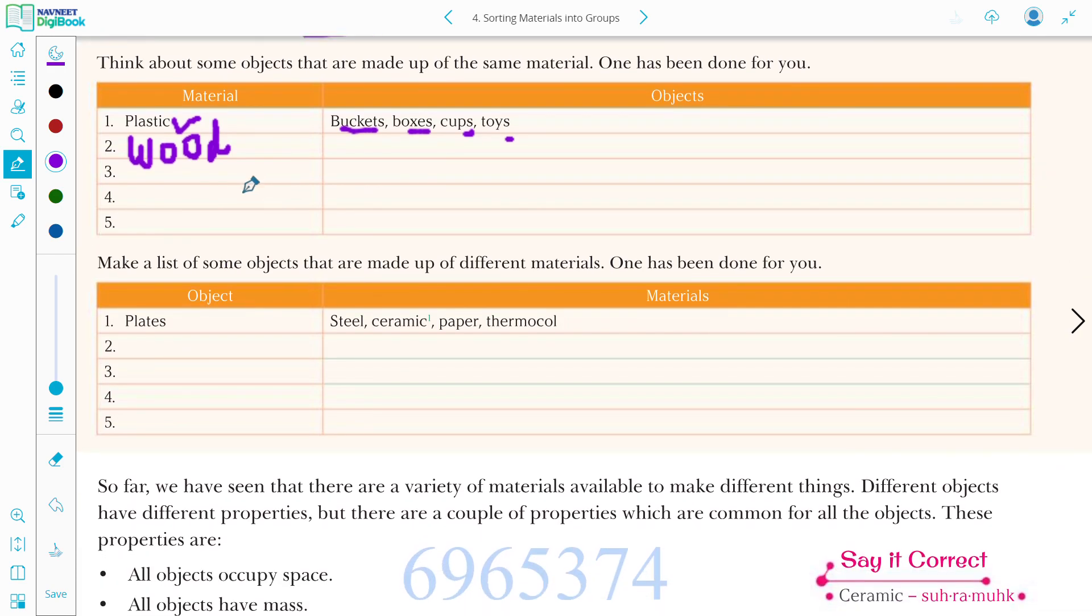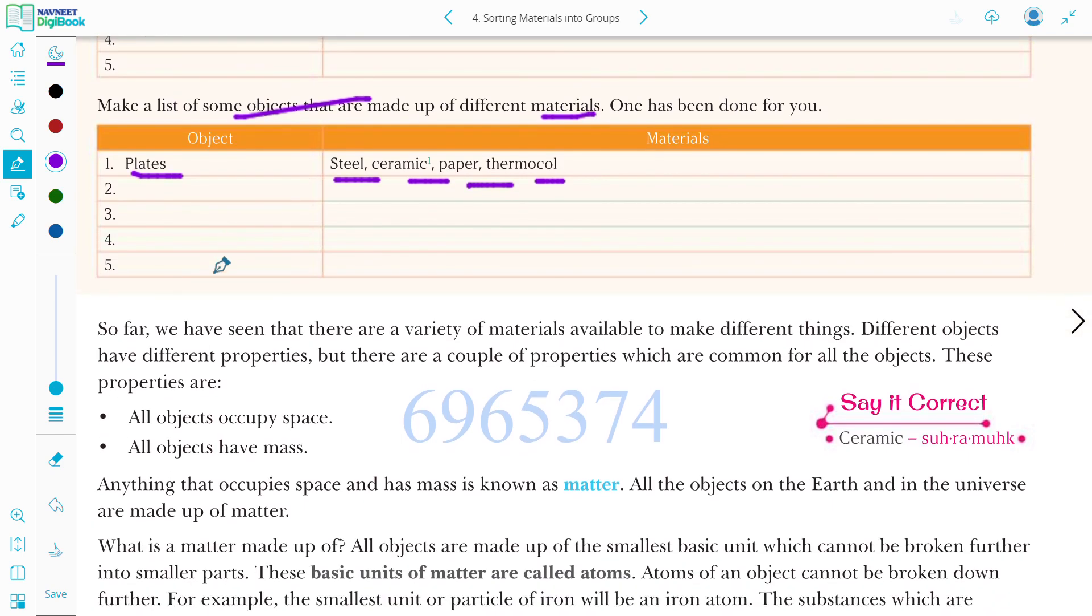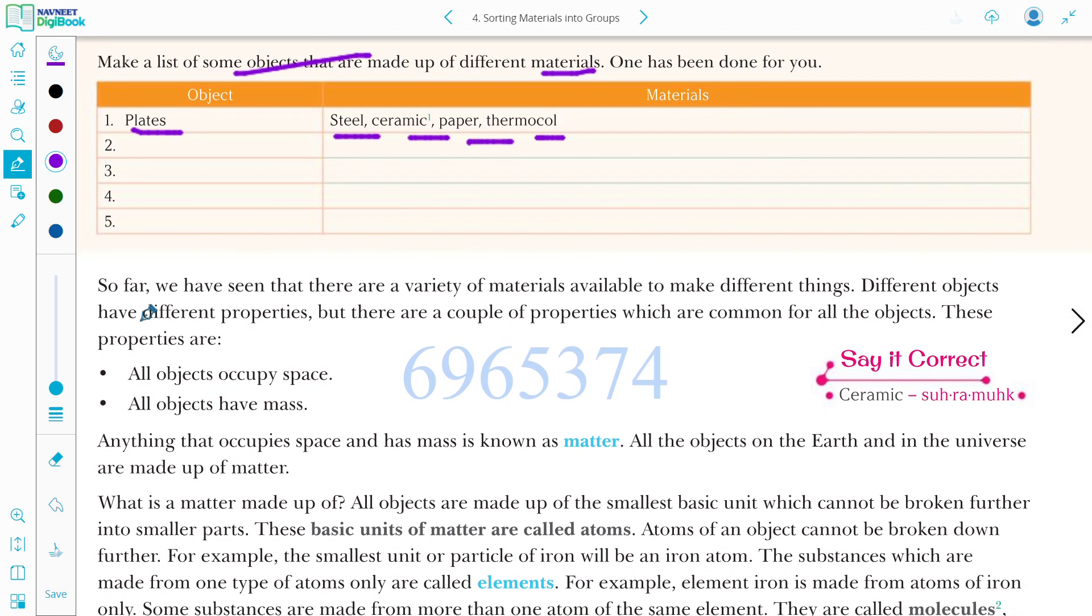Then make a list of some objects that are made from different materials. One has been done for you. Plates. Plate is made up of steel, ceramic, paper, thermocol. Another one, let me consider it as a pen. Pen is made up of plastic, sometimes of wood, sometimes of steel. The other three you can do it on your own.